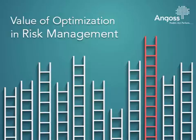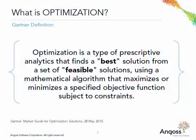Optimization in predictive analytics allows organizations to solve complex business problems to achieve maximum results with minimum resources under real-world constraints. Let's start with Gartner's definition of optimization: optimization is a type of prescriptive analytics that finds a best solution from a set of feasible solutions using a mathematical algorithm that maximizes or minimizes a specified objective function subject to constraints.